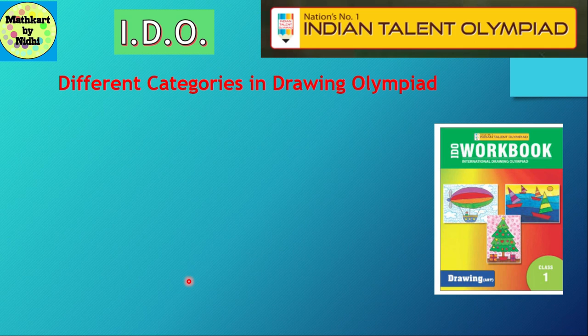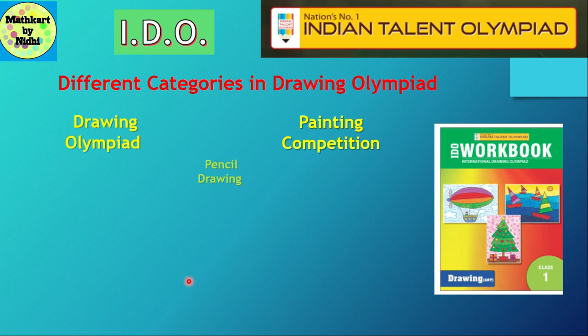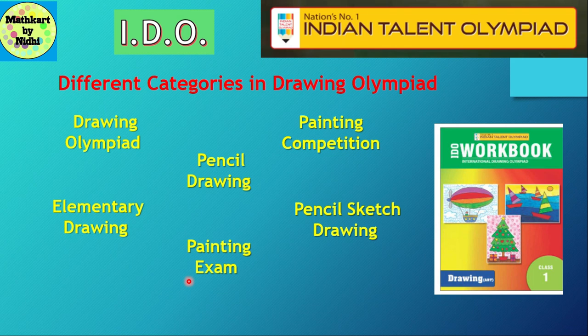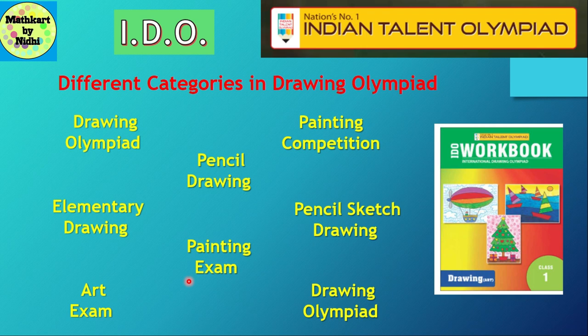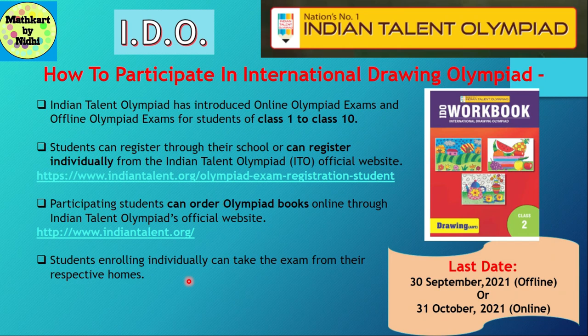There are different categories in Drawing Olympiad according to the age and classes, such as Drawing Olympiad, Painting Competition, Pencil Drawing, Elementary Drawing, Pencil Sketch Drawing, Painting Exam, Art Exam, and Drawing Olympiad. According to your class and section, there will be different categories of exams, which I'll discuss in the further slides.